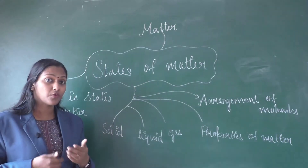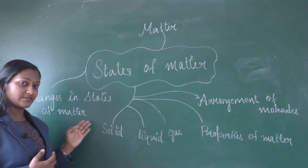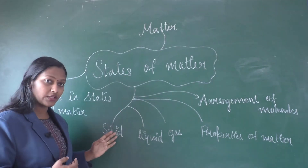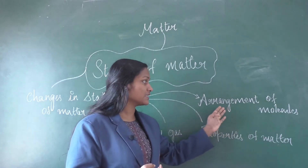We will discuss the topics: what is matter, changes in states of matter, different states of matter — solid, liquid, gas — properties of matter, and the arrangement of molecules. So what is matter? Air all around us is made of matter. Water we drink is also made of matter. Books, food we eat, and clothes we wear are all made of matter.